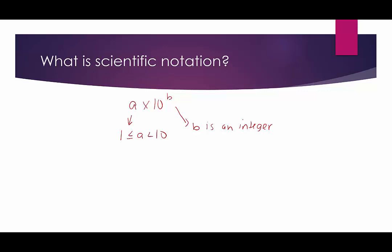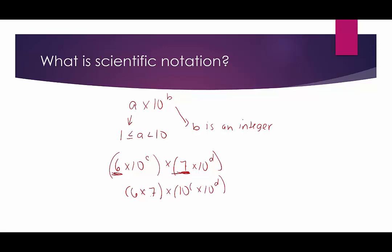With multiplication and division, we're given numbers written in scientific notation. For example, we might be given 6 times 10 to the C times 7 times 10 to the D. We want to use the commutative property — everything here is multiplication, so we can rewrite things the way we want. We put our numbers together: 6 times 7, and then get our powers of 10 together: 10 to the C times 10 to the D. But when we multiply 6 times 7, we get 42 — a number bigger than 10 — and this would be 10 to the C plus D.